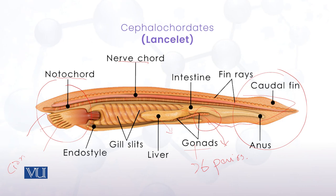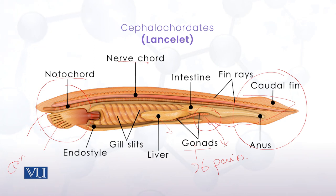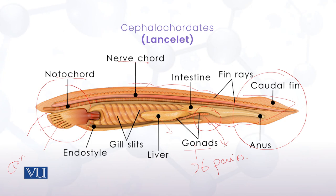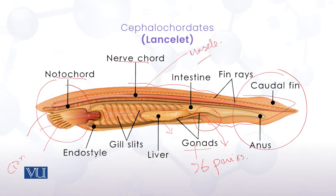As well as water, gonads and gametes also exit the body through the atriopore. There are 26 pairs of gonads, which are metamerically arranged along the pharynx region. There is also a very important structure: the muscles, which are present along the notochord region.